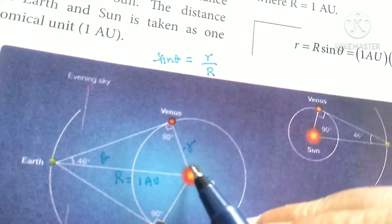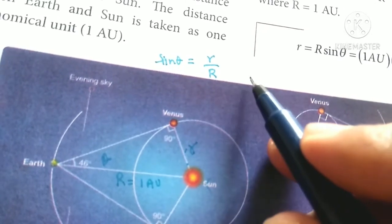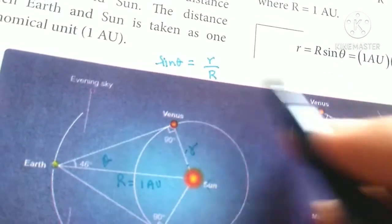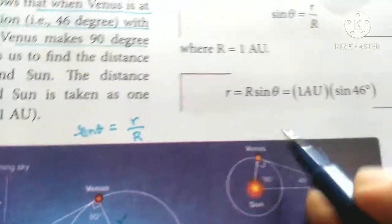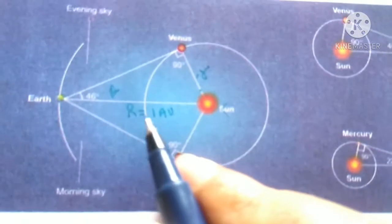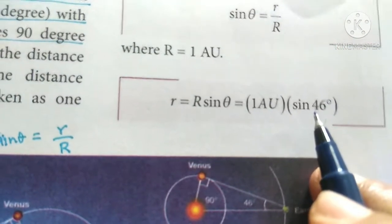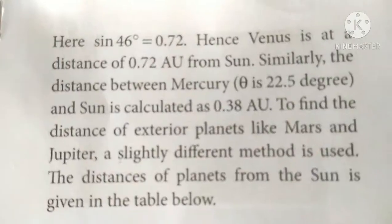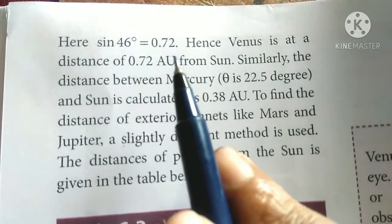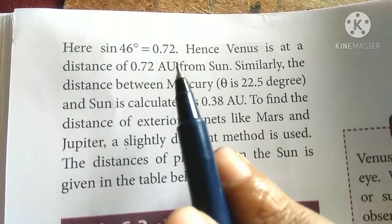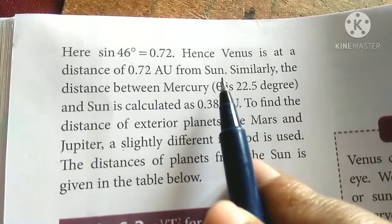Therefore the sun to Venus distance r equals R sin theta. R equals one astronomical unit times sin 46 degrees. The 46 degree table value is 0.72, so Venus is 0.72 astronomical units from the sun.